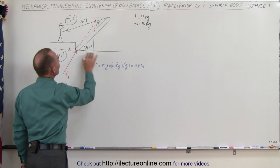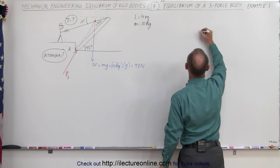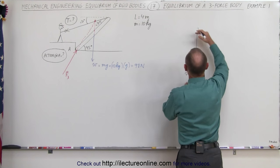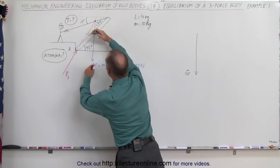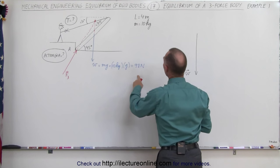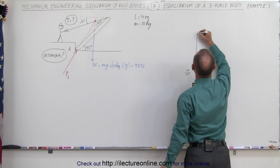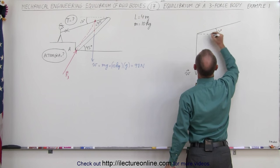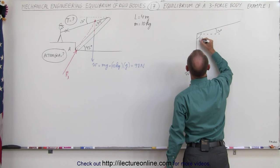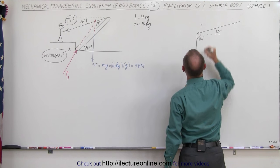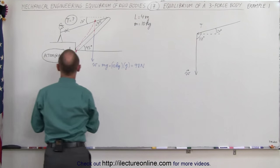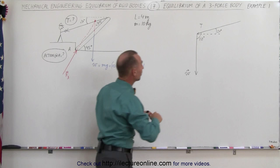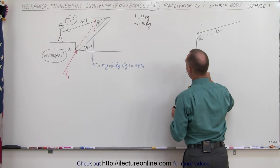So I can make a triangle with these three forces. My first force will be in this direction — that's the weight of the beam — with a magnitude of 98 Newtons. The second force, which is the tension, will be acting in this direction, making an angle of 20 degrees with the horizontal, which means it makes an angle of 110 degrees with the vertical. To have all this in equilibrium, I take my third force and complete the triangle.